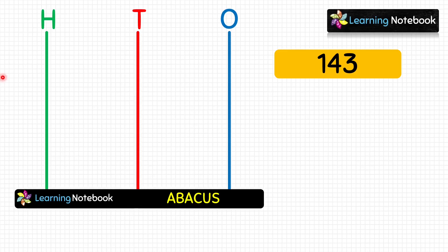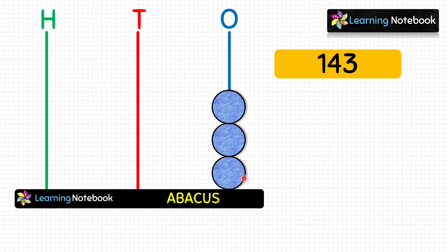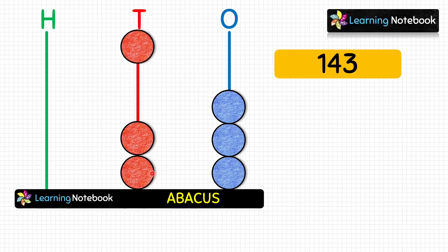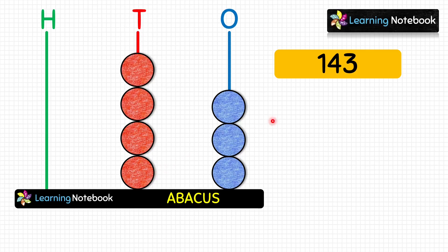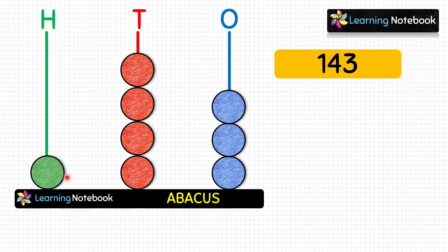Let's represent this three-digit number on the abacus. The digit at ones place is 3, so let's place three blue coins at the ones spike. The digit at tens place is 4, so let's place four red coins at the tens spike. The digit at hundreds place is 1, so let's place one green coin at the hundreds spike.